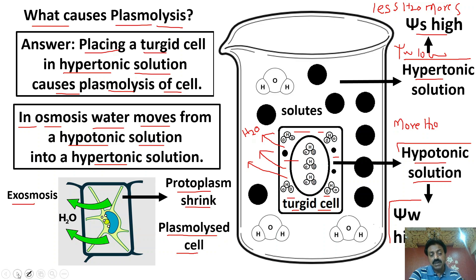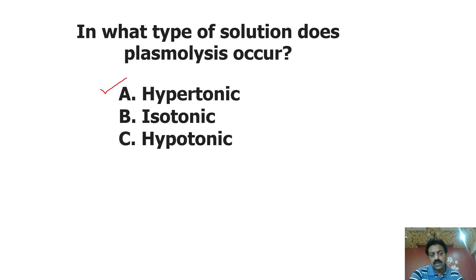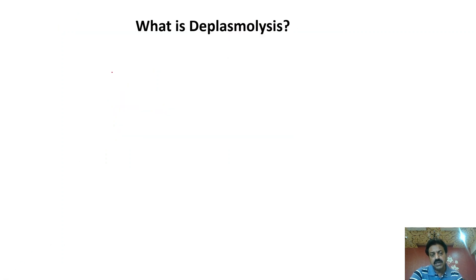Ab hum aate hain deplasmolysis ki taraf. Pehle ek important question: if the question asks — in what type of solution does plasmolysis occur — aur aapko option A mein hypertonic solution diya jaaye, B mein isotonic solution, C mein hypotonic — toh dear students, your answer will always be hypertonic solution. Toh jab bhi hum ek turgid cell ko hypertonic solution mein place kar dete hain, Exosmosis ki wajah se usme plasmolysis ka process ho jaata hai — aapko hamesha hypertonic ka answer opt karna padega.